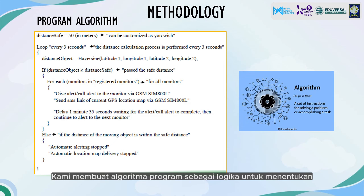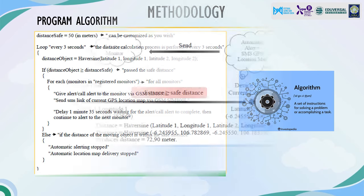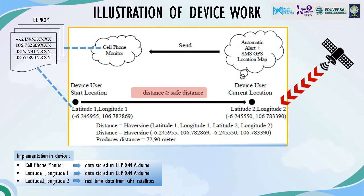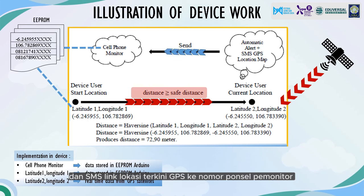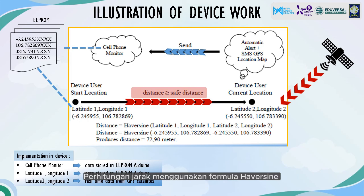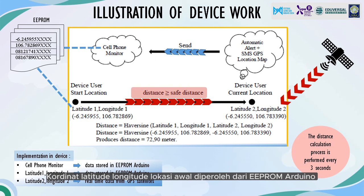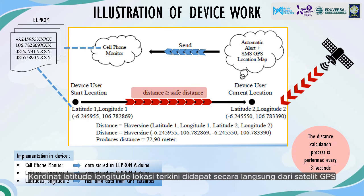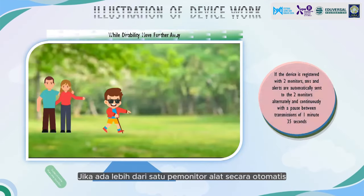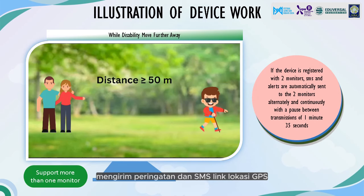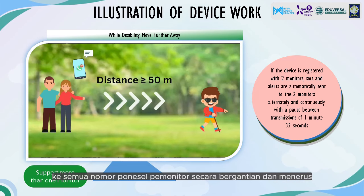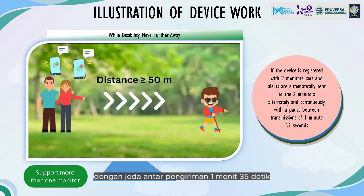We created a program algorithm as the logic to determine how the detector program works. When the object moves beyond a safe distance, the device automatically sends an alert and SMS link to the GPS location map to the monitor cell phone numbers stored in the Arduino's EEPROM. Distance calculation using the Haversine formula is done every two seconds. The latitude and longitude of the initial location comes from EEPROM, while the current location is obtained in real-time from GPS satellites. If more than one monitor is registered, the detector automatically sends alerts and SMS links alternately and continuously with a sending interval of 1 minute and 35 seconds.